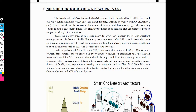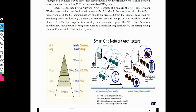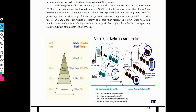Neighborhood area network uses distribution system for the control center. The range of NAN is 10 to 100 km, and its frequency is 900 MHz. Home area network data rate is 1 to 10 Kbps, and it operates on communication technology like Zigbee. Neighborhood area network frequency is 10 to 100 Kbps, whereas home area network is 1 to 10 Kbps. This is the exact difference between home area network and neighborhood area network.